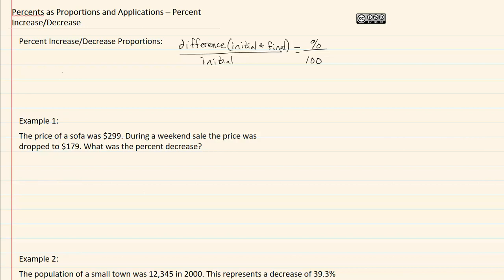Sometimes we're just given the final amount and we need to find the initial amount. In that case, we would start with our final amount over our initial, which we would call x. We would start with a hundred percent for our initial, and then we would either be adding or subtracting the percent that we're given, depending on whether we're increasing or decreasing, all over a hundred.